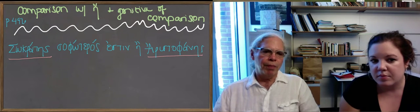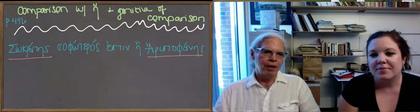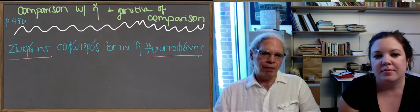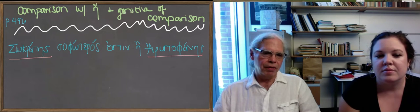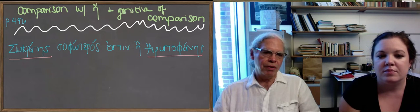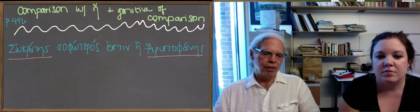So that's the example we put up on the blackboard. Socrates, that's the nominative of Socrates' name. Sophoteros estin. Estin, remember, means he, she, or it is. And sophoteros means wiser.